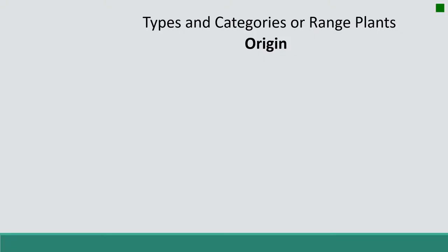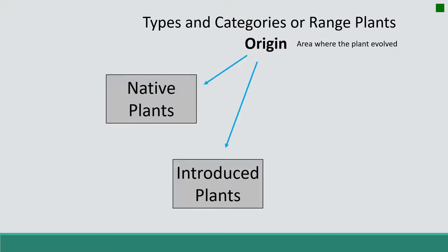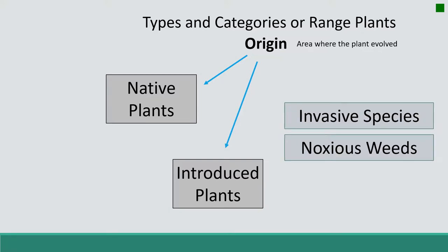I want to start by talking about origin. When we think about the word origin, we're referring to areas where plants have evolved. We have native plants, which have typically originated in North America, and we have introduced plants, which were intentionally or accidentally brought to North America. Within these two categories, we also have invasive species and noxious weeds that we'll be talking about today.